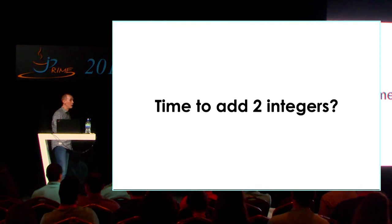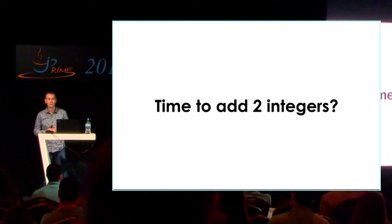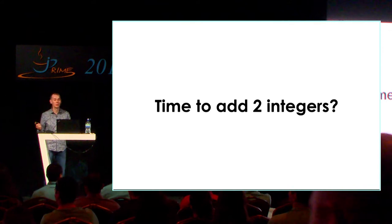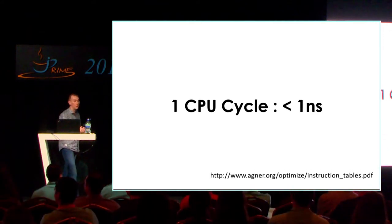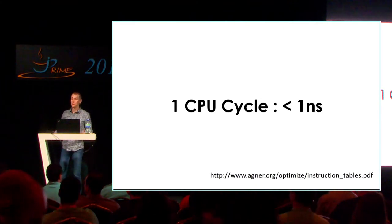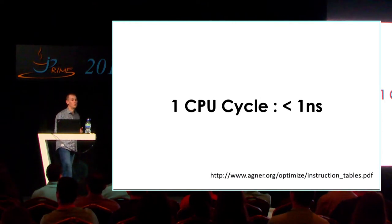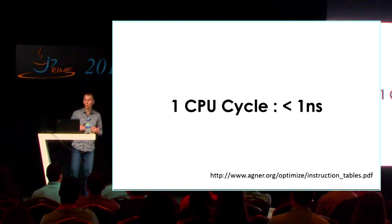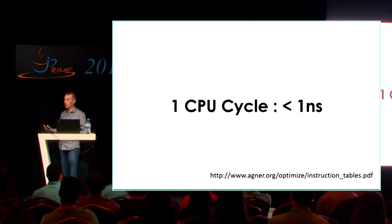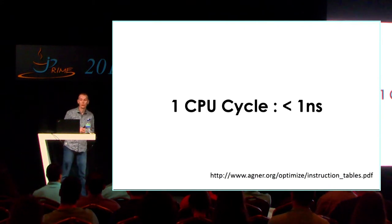Let's focus on CPU and memory performance. How long does it take to add two integers on a modern Intel CPU? One cycle — less than one nanosecond. That's if you've got two integers in two registers ready, you do an addition, you get a result. Many instructions only take one cycle. Some take longer, like divide operations and some memory operations, but it actually doesn't take very long.